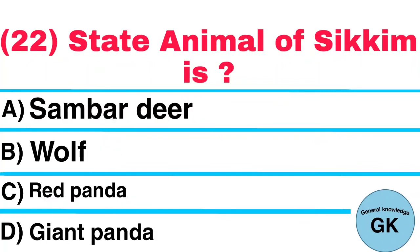Question Number 22. State Animal of Sikkim is: A. Sambar Deer, B. Wolf, C. Red Panda, D. Giant Panda. Answer: Red Panda.